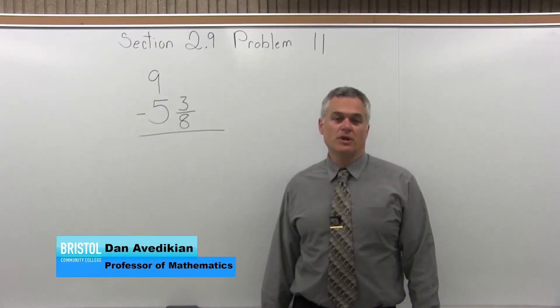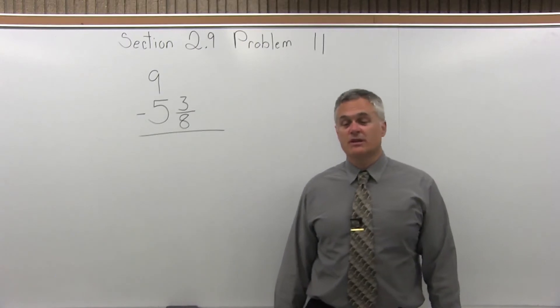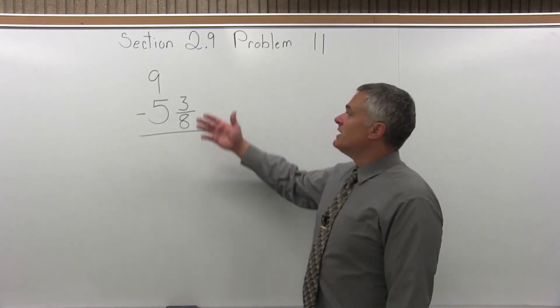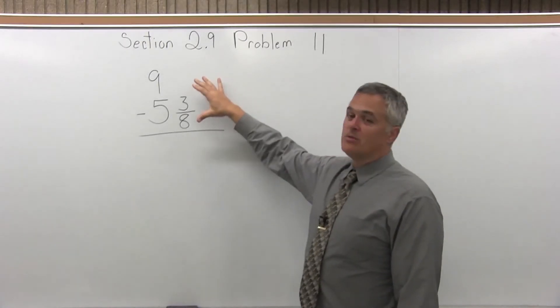This is Section 2.9, Problem 11. We have 9 minus 5 and 3 eighths. The 9 has no fraction with it. That's the problem that makes this a little bit different.